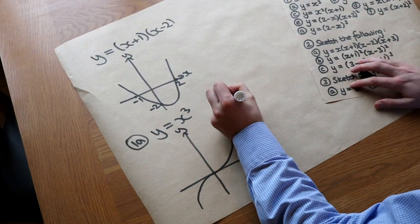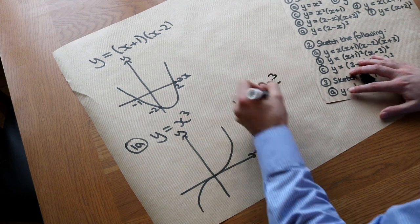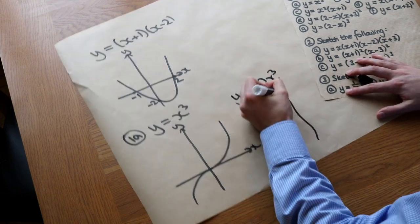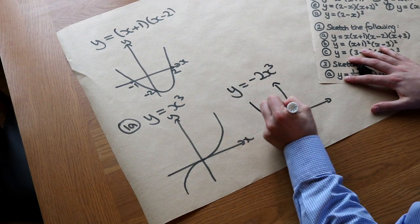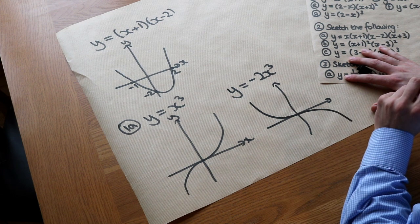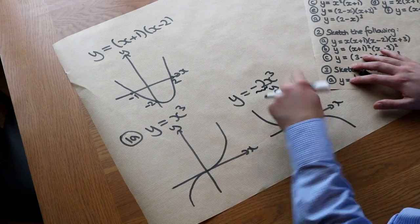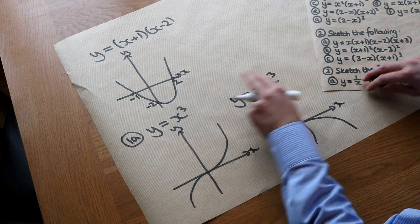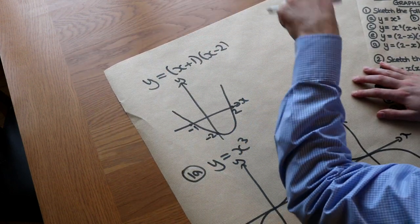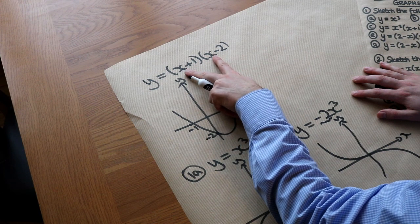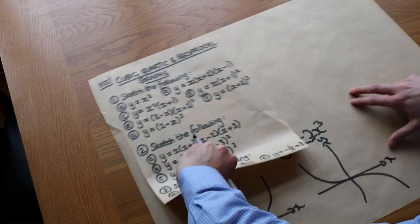If we had y equals minus x cubed or minus 2x cubed, then it would be a downhill shape, like a downhill roller coaster. Always look at the number in front of the x cubed to see whether it's a positive or negative cubic — just like we know a positive quadratic gives a smiley face shape because the x squared term in the expansion is positive.